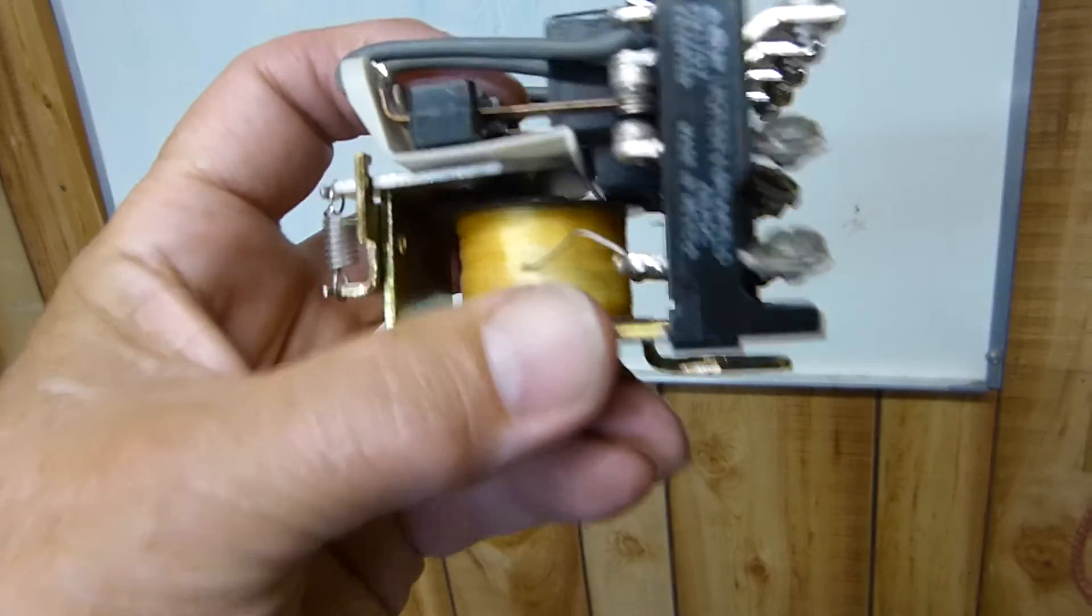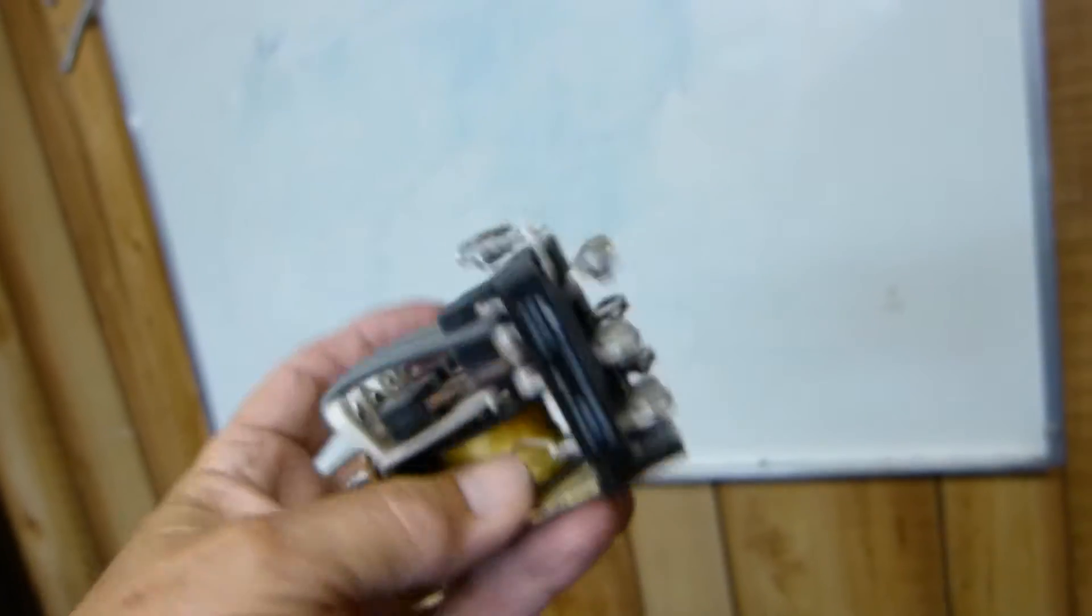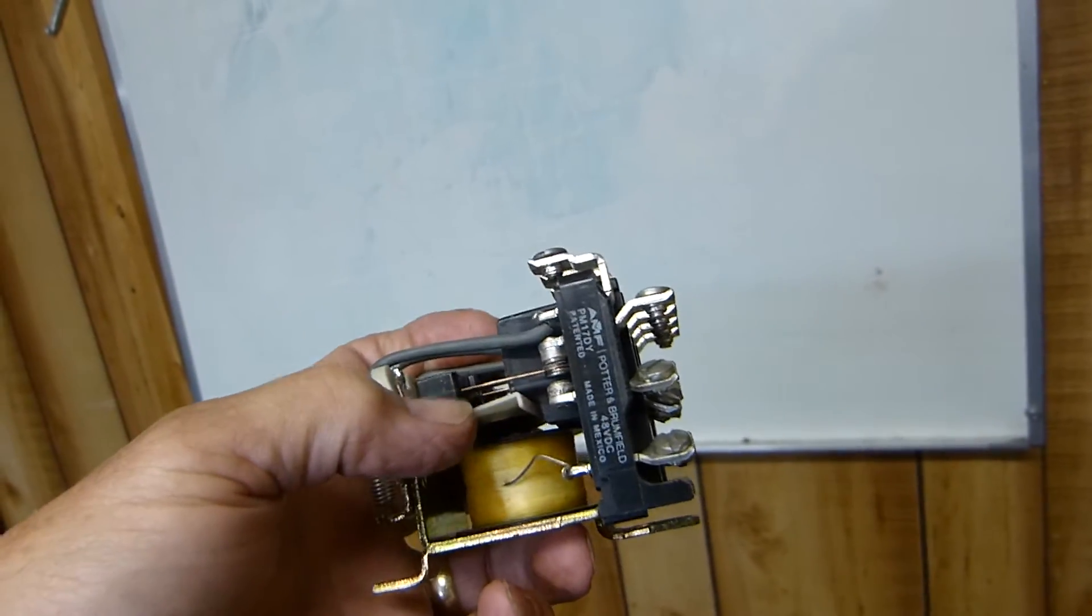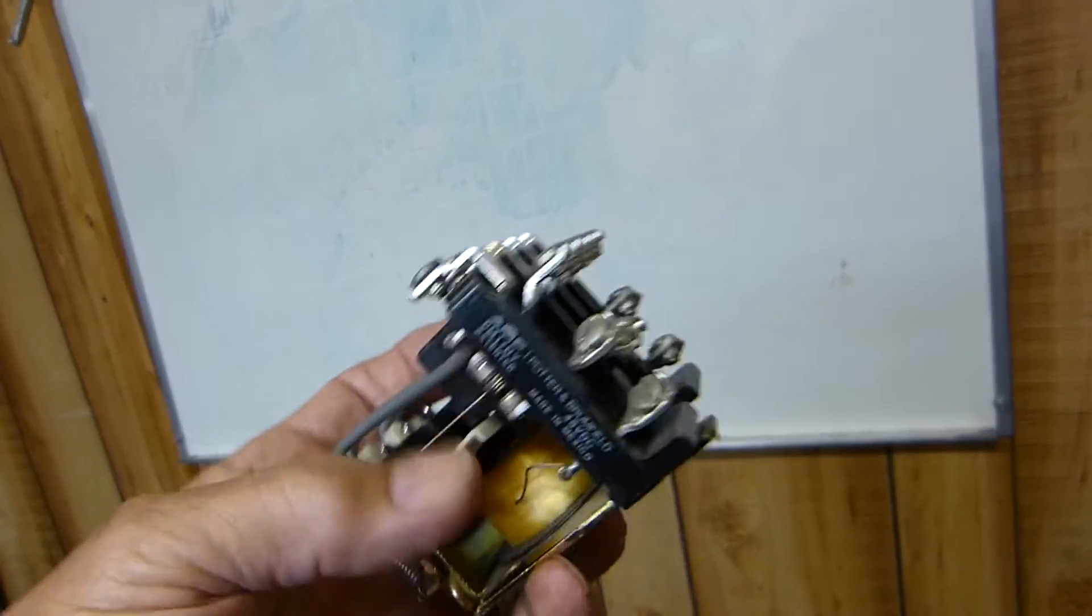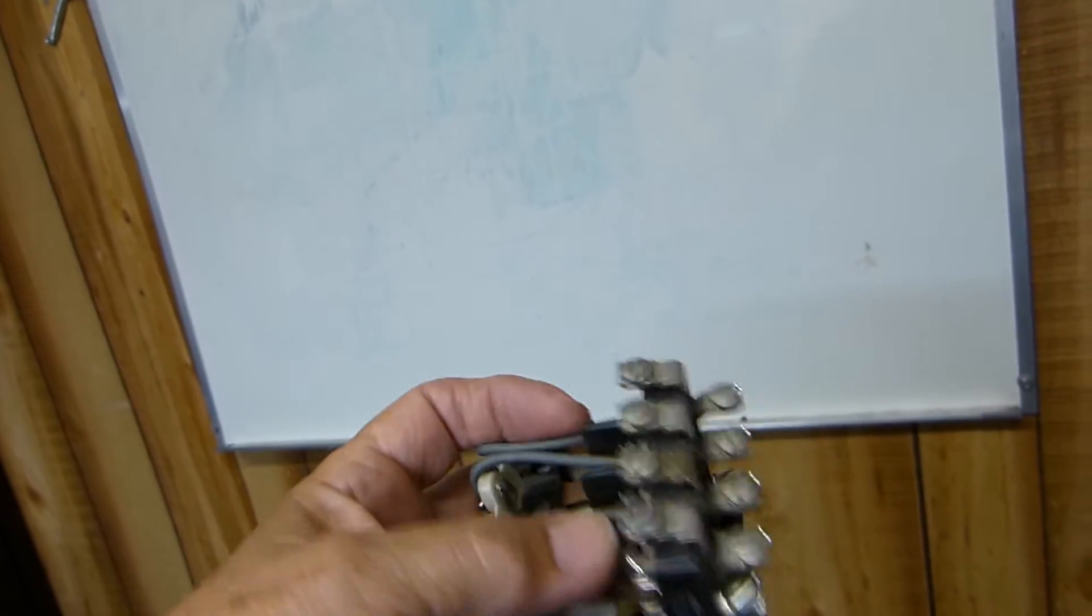When the coil is energized, it changes state right there. This one's got four sets of contacts on it. Each contact is a single pole double throw. It's got four of them, so it's got four poles double throw. Double throw means it's got two positions that it can operate in.